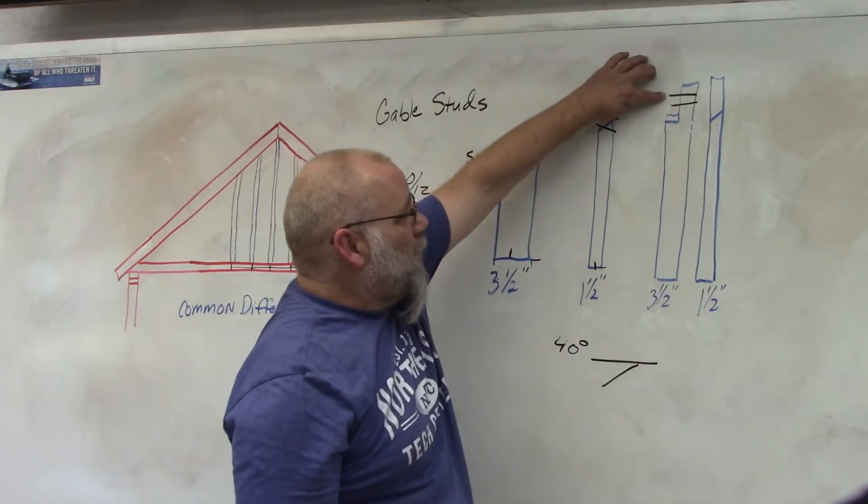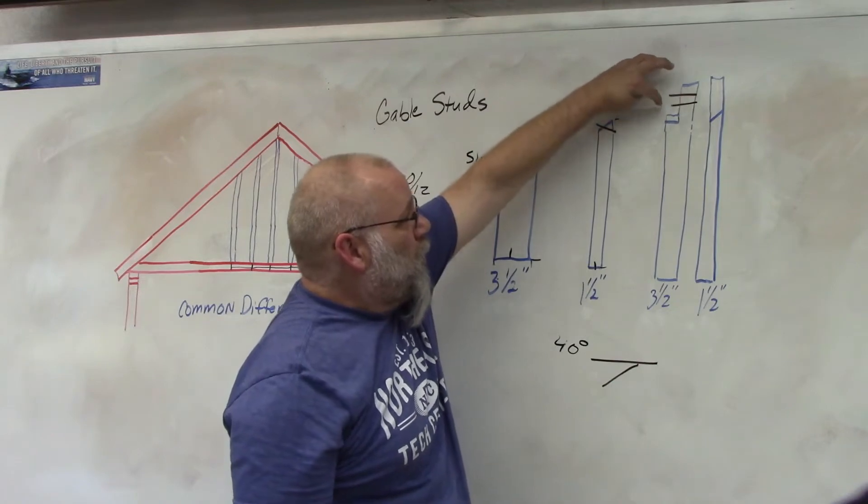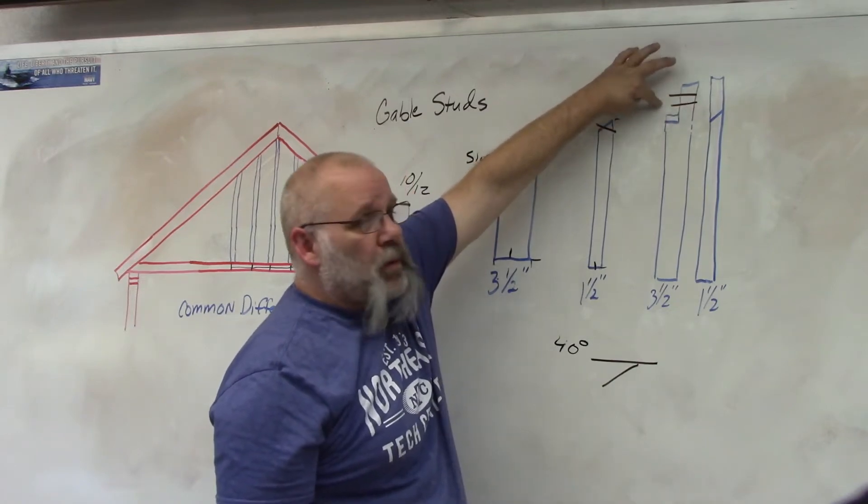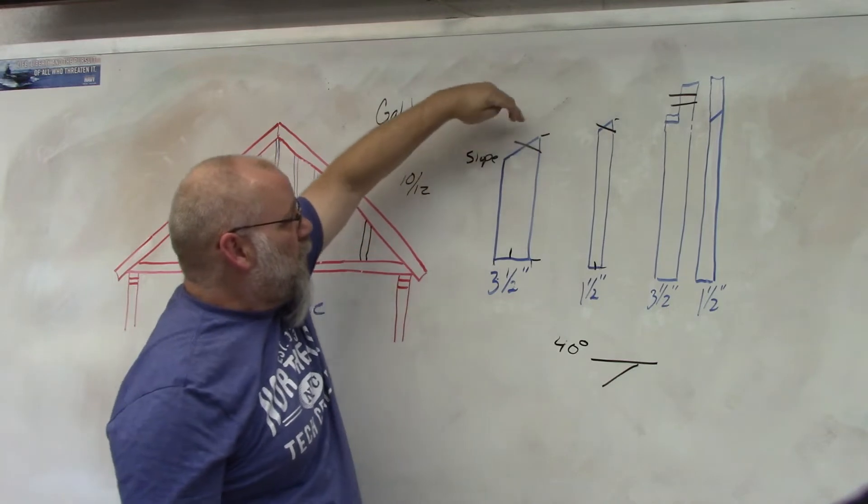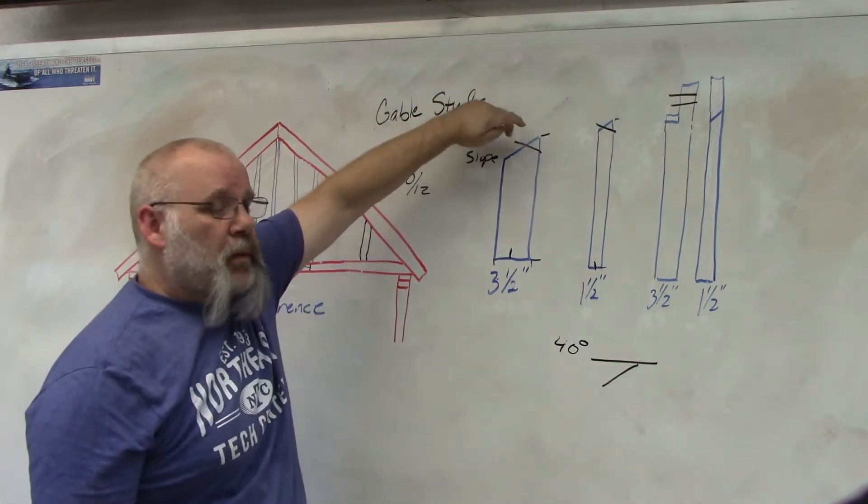And the reason they do that is so that they can nail it from the back side of this into the rafter. Whereas this one you have to toenail and this one you have to toenail.